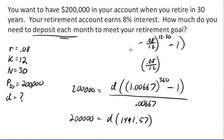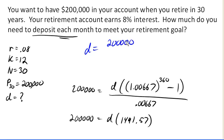So d, after dividing, will be 200,000 divided by 1491.57. And I could go back to my calculator and figure out that that's $134.09. And again, that's approximate. We did round a bit, but that's probably going to be within probably within a dollar of the correct monthly amount.